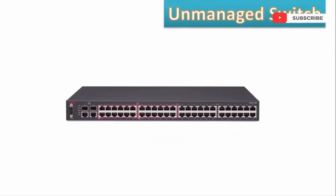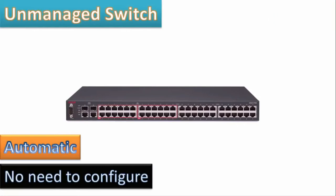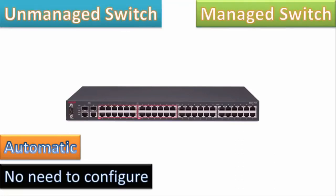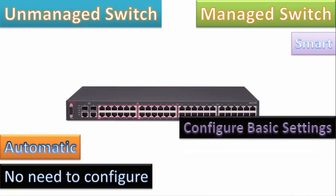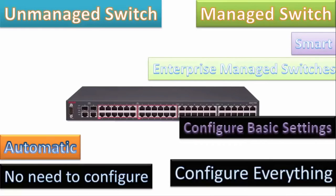Switches are of two types: unmanaged switches, which are automatic and cannot be configured — they handle tasks by themselves — and managed switches. Managed switches have two subcategories: smart switches, where you can configure basic settings like bandwidth on ports, used in Fast Ethernet and Gigabit Ethernet; and enterprise managed switches, used in big industries where you can configure almost everything via a console command line to edit network information.